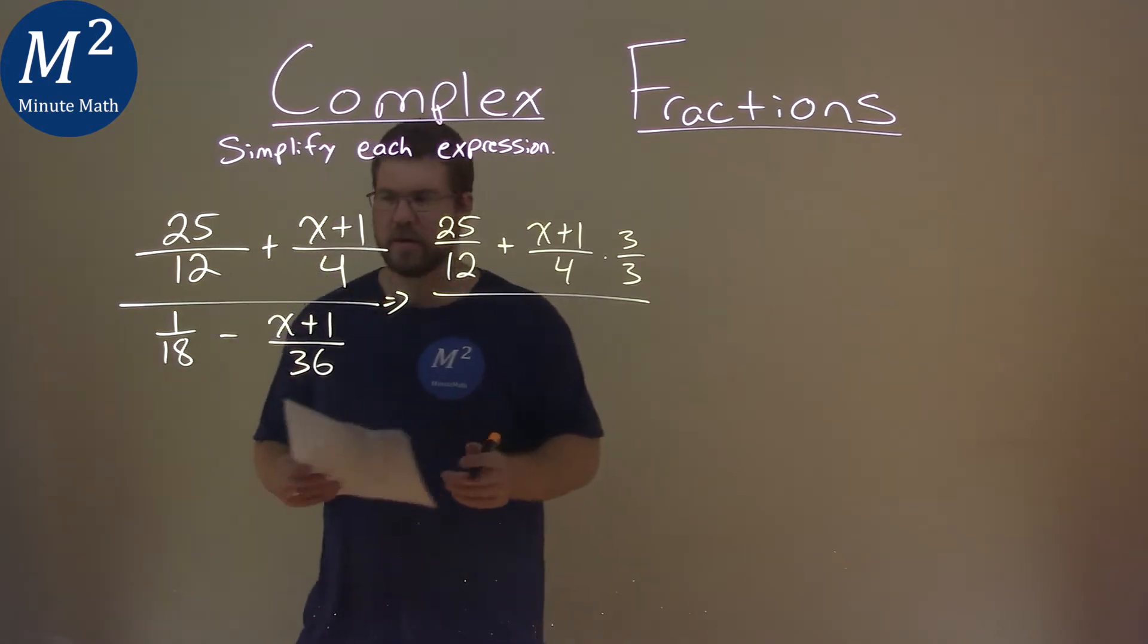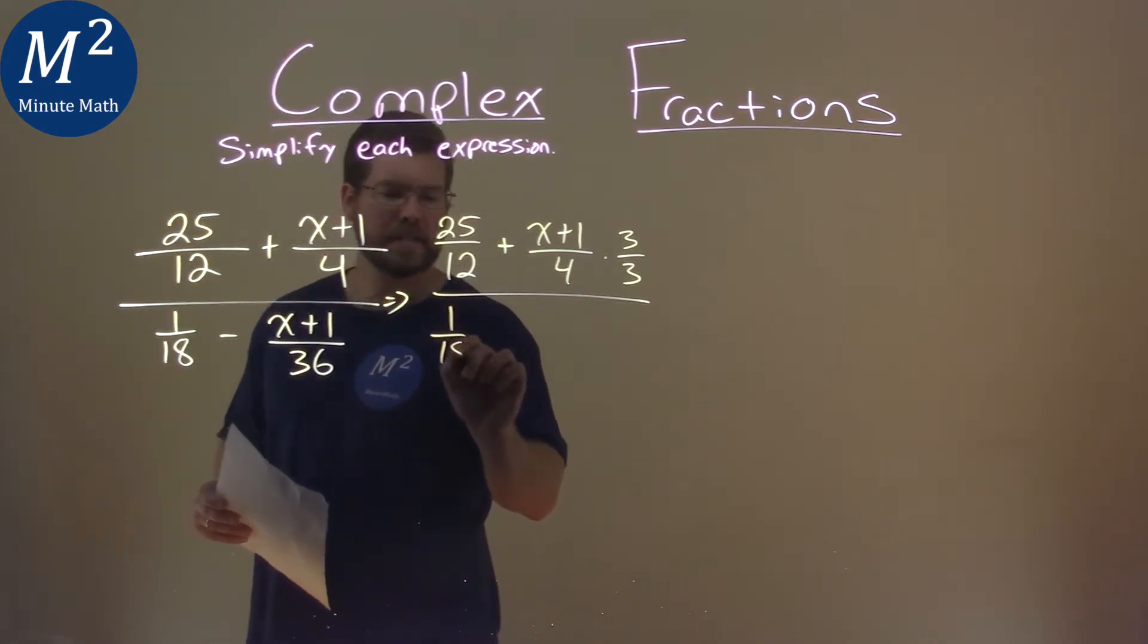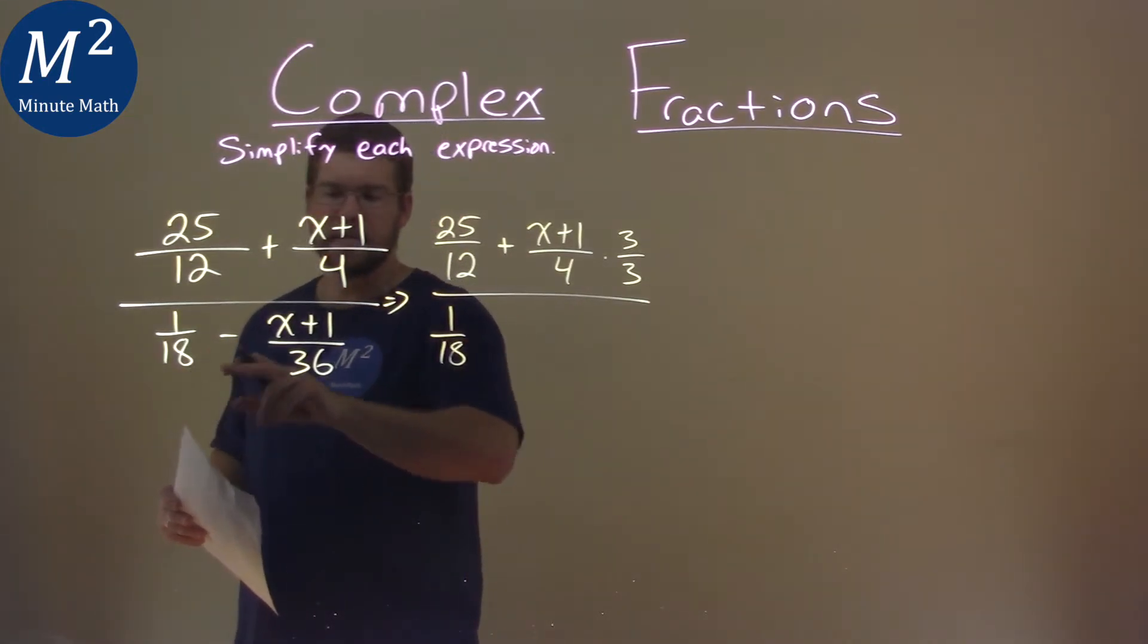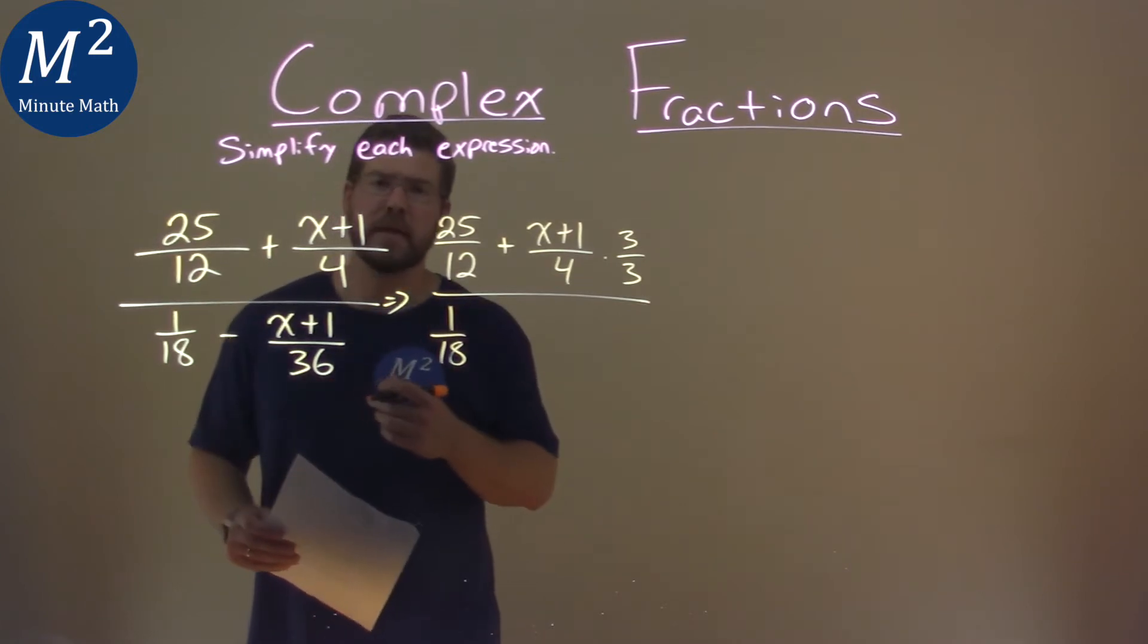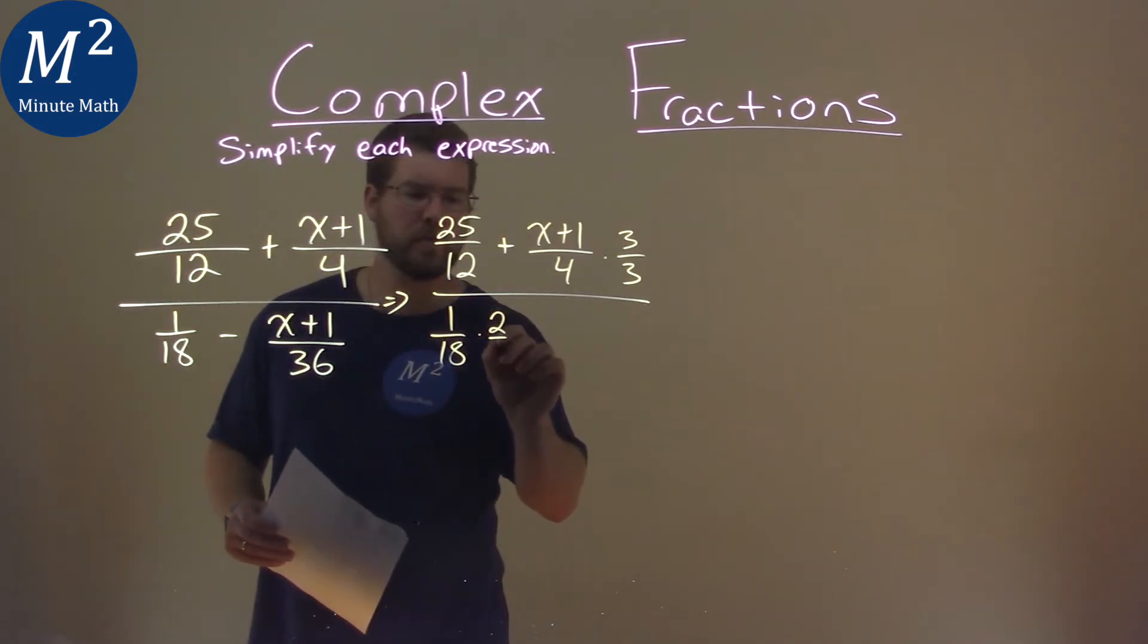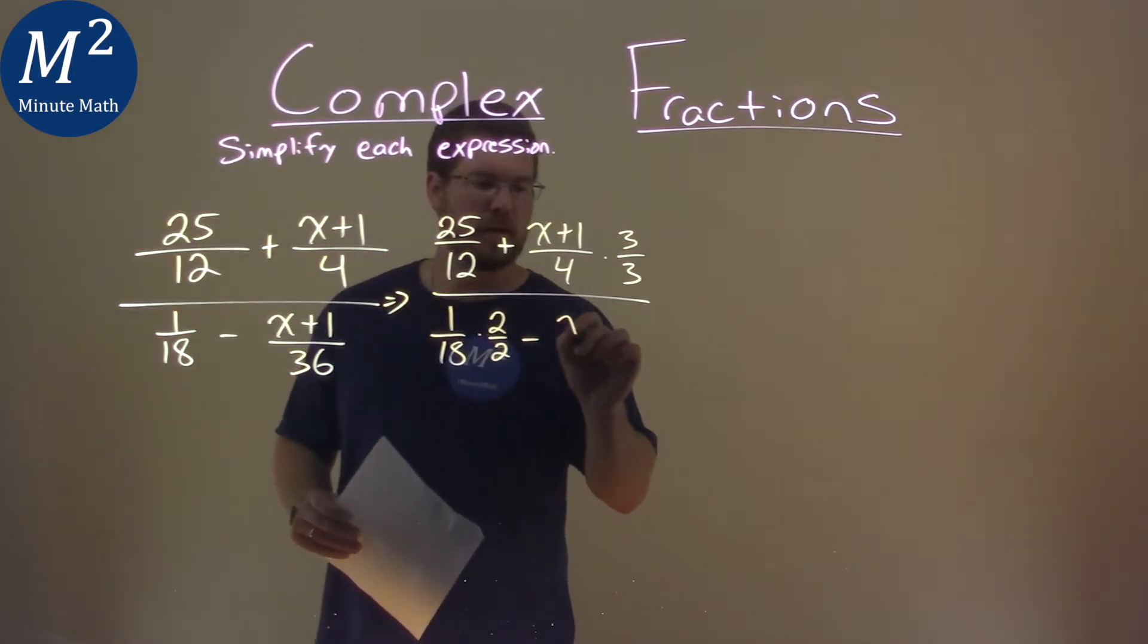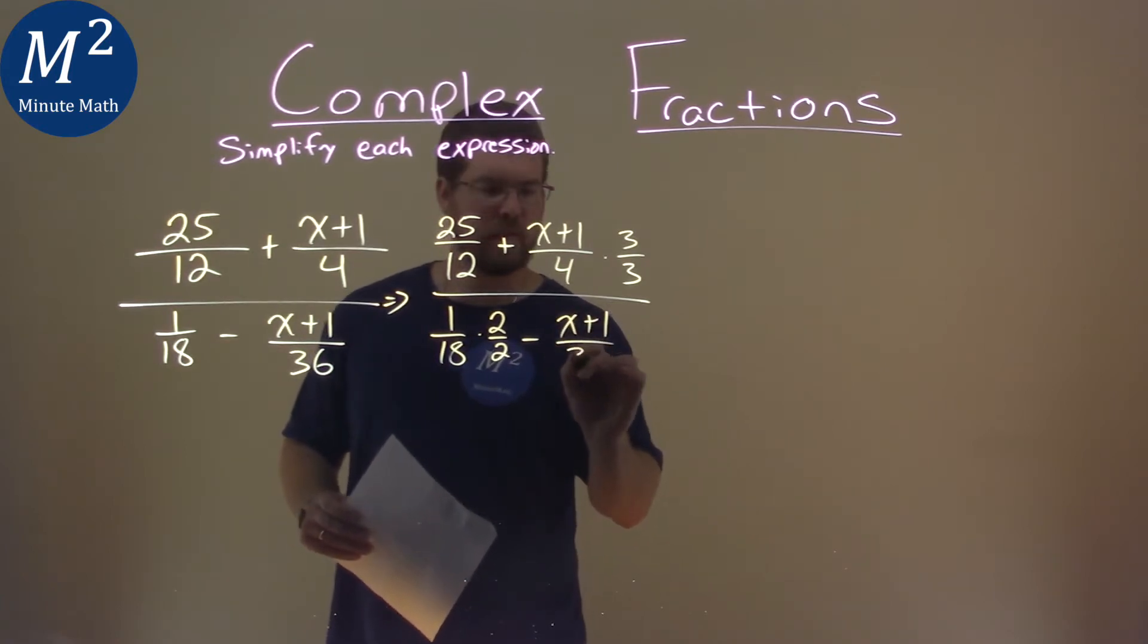Denominator, we're going to do a similar thing. We have 1 over 18 here, and I can make 18 into 36 by multiplying it by 2. So multiply this by 2 over 2. Now I subtract an x plus 1 over 36.